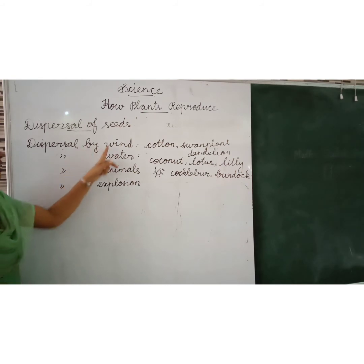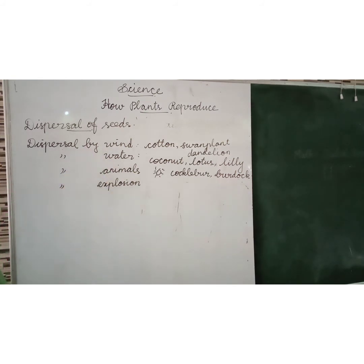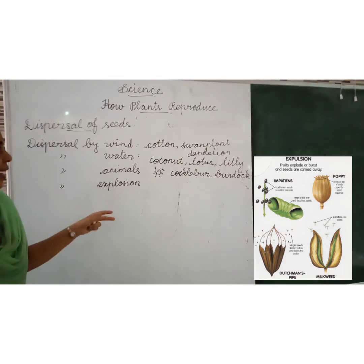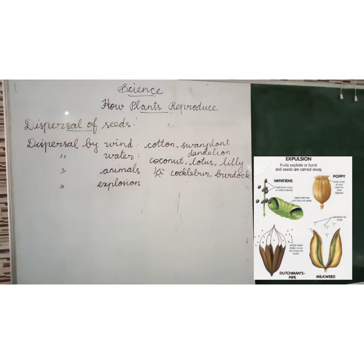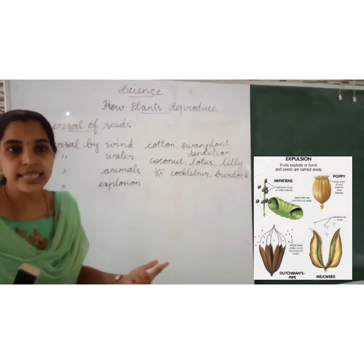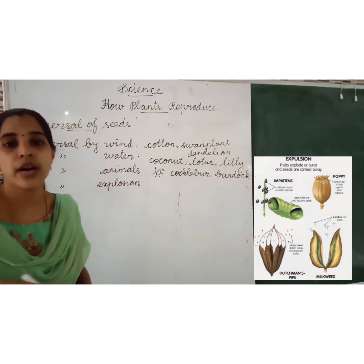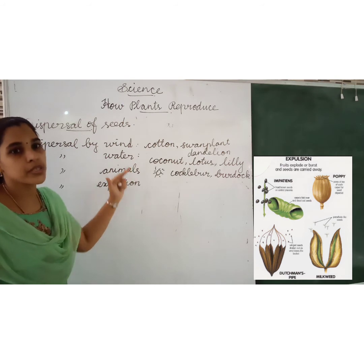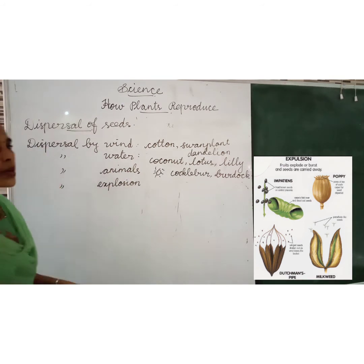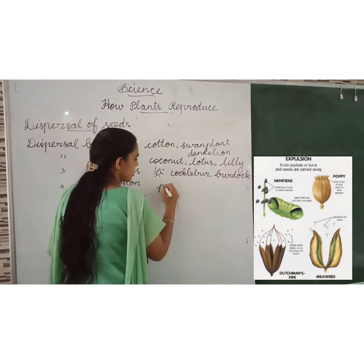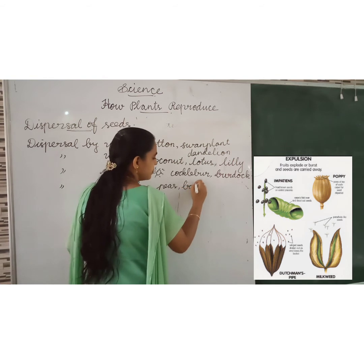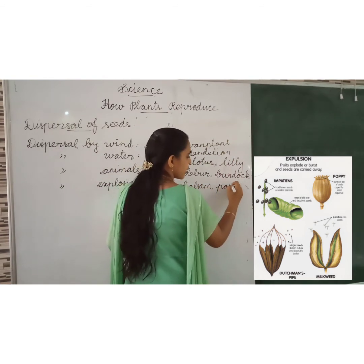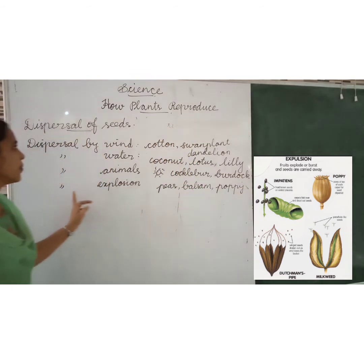Fourth method is dispersal by explosion. Some plants like peas and beans — after these fruits ripen, they will blast. After drying or ripening the fruits, they will blast and the seeds will be spread from one place to another. This is dispersal by explosion. Examples of dispersal by explosion: peas, balsam and poppy.